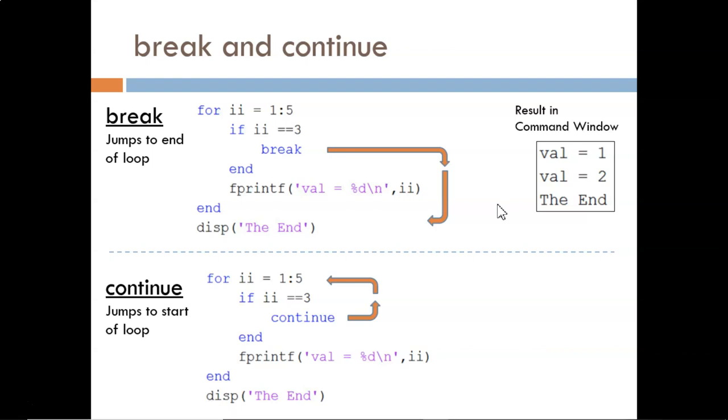In the bottom example, the first two iterations work the same way. Then, when ii equals 3, the if condition is true, and the continue statement is processed. This skips the sentence printing, and jumps back to the top.